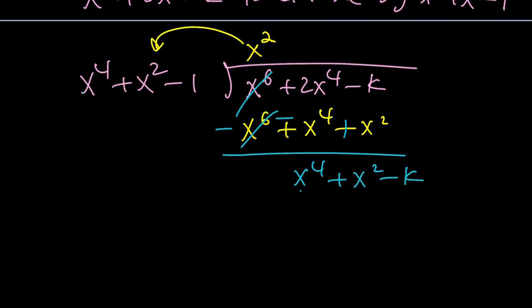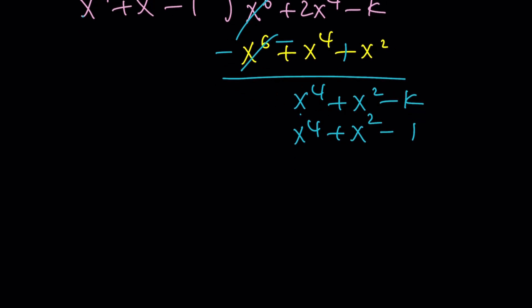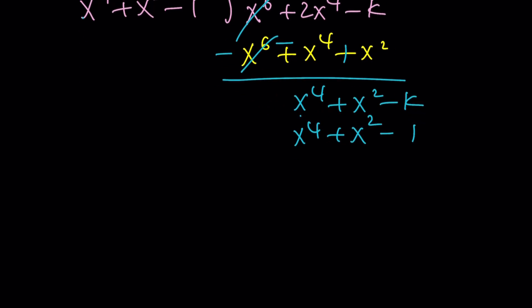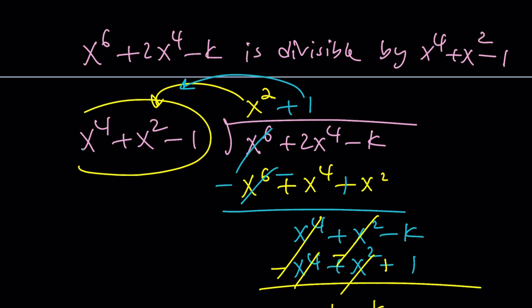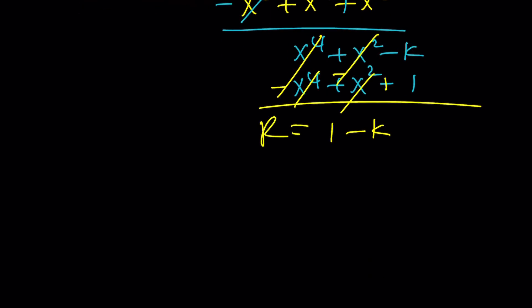x to the 4th goes into x to the 4th one time. So we're going to add 1 and distribute 1 here. So that's going to give us x to the 4th plus x squared minus 1. At this point, you can tell what k is, but let's just go through the motions. Minus, minus, plus, negate and add. x to the 4th is going to cancel. x squared is going to cancel out. 1 minus k is supposed to be the remainder. But wait a minute. Didn't you just say this goes into that evenly? So the remainder should be 0, which gives us k equals 1. And that was what we were looking for.